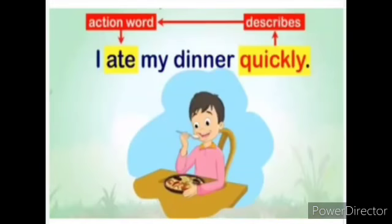For example: 'I ate my dinner quickly.' Here, 'quickly' is describing the action word 'ate' — how he ate the dinner, quickly or slowly. So the action word is being described by the adverb 'quickly.' Here, 'quickly' is an adverb.